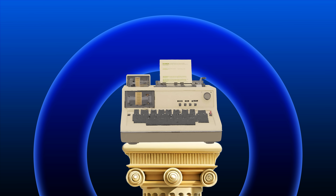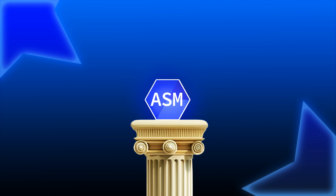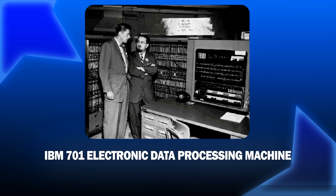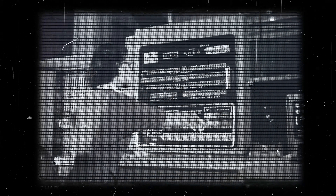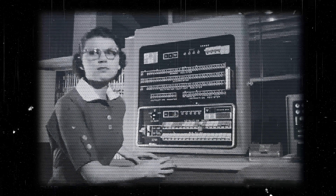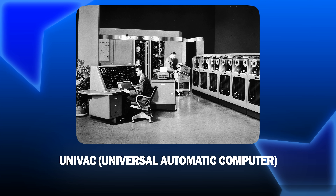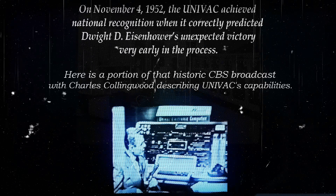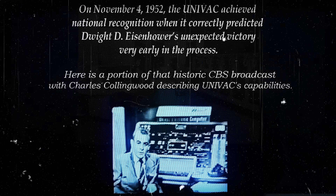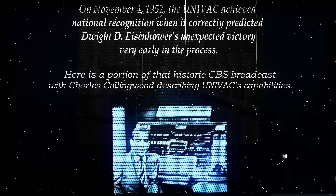For the first time, the computer was speaking a language that humans could learn and not just endure. By the mid-1950s, the assembler was no longer an experiment — it was a necessity. IBM's first commercial machines shipped with assemblers. Univac used symbolic coding in business applications, crunching payrolls and census data. It could add 2,000 separate additions in one second, make 500 multiplications, 250 divisions, and do all sorts of other complicated things.